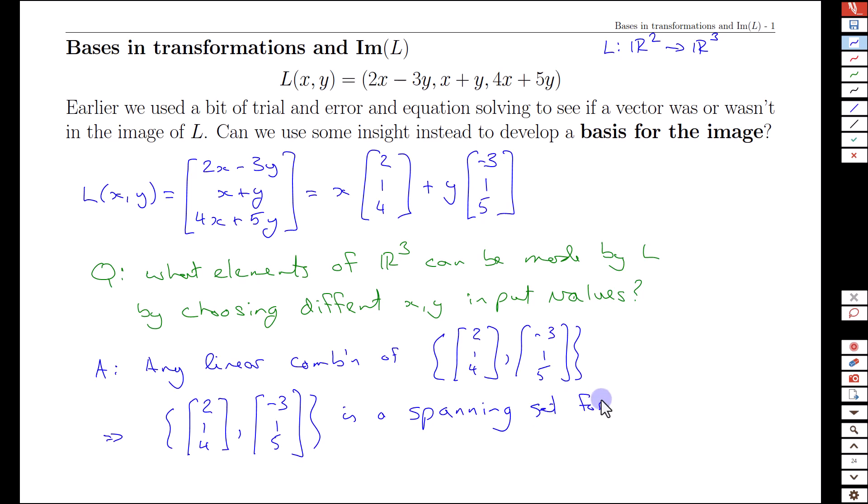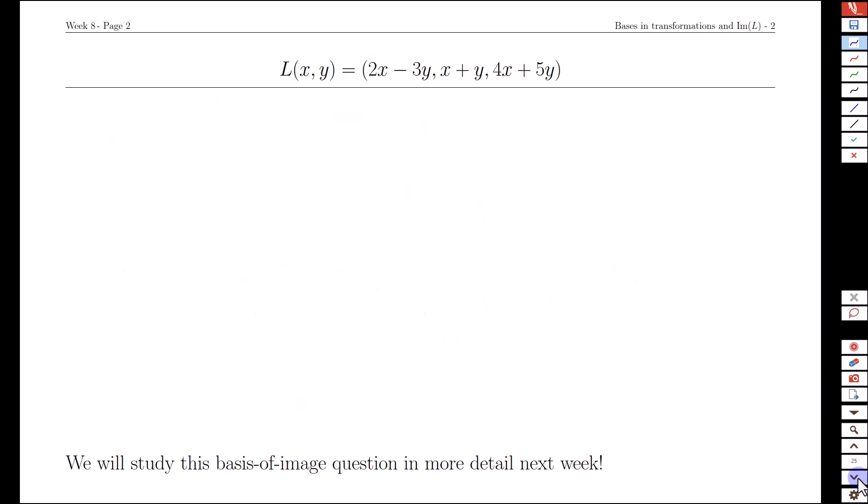If we have a spanning set for a vector space and we're looking for a basis, we need one more ingredient. We recall that a basis equals a spanning set plus linear independence. We need both conditions to call a set a basis.